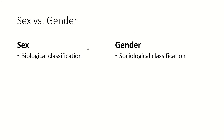Before we get too into it, I want to talk about the difference between sex and gender. We sometimes use these terms interchangeably, but they are definitely not the same. Sex is a biological classification. Gender is a sociological classification, or a social construct.